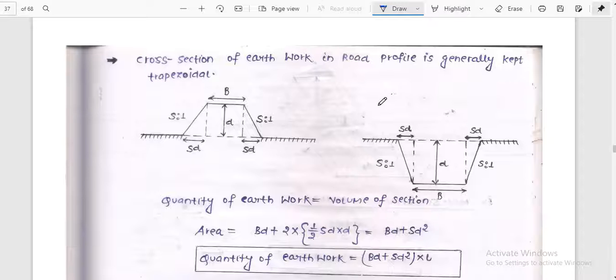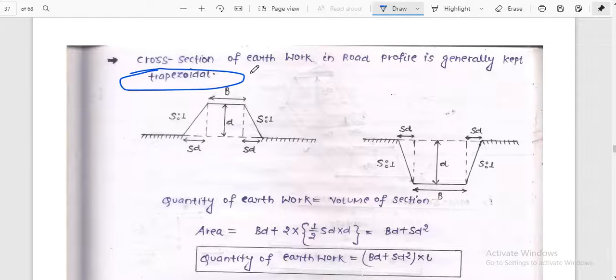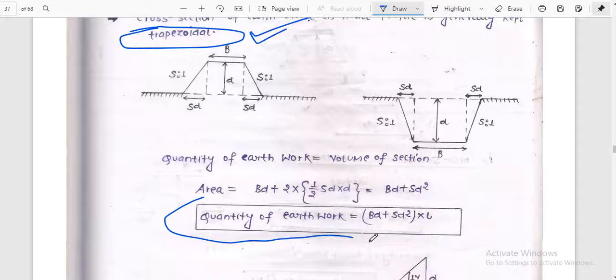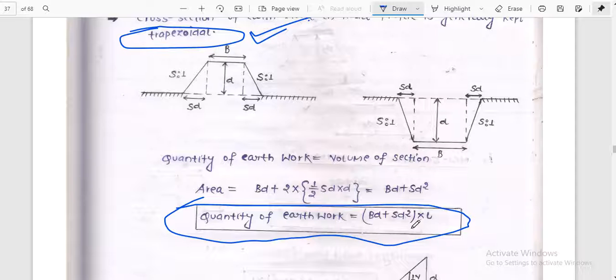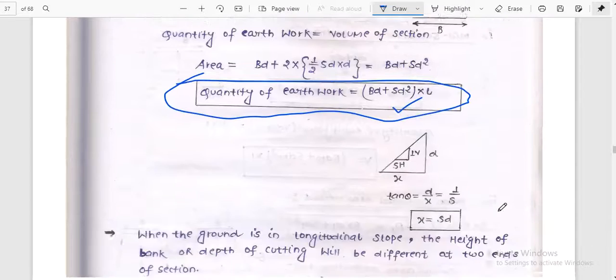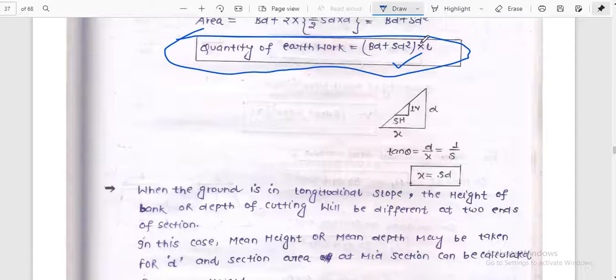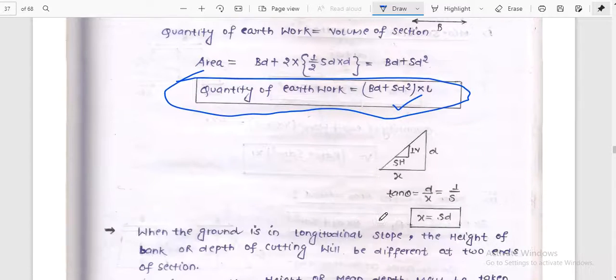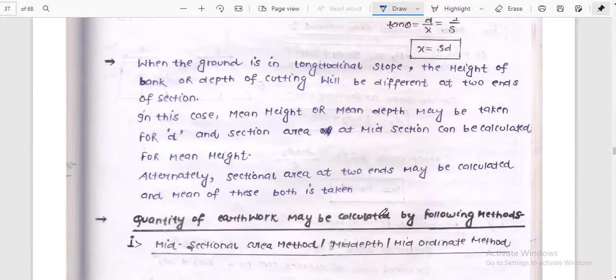Cross section of earthwork in road profile is generally kept trapezoidal, okay, trapezoidal shape. The quantity of earthwork is BD plus SD squared into L, where S is the slope, D is the vertical distance, L is the length, and B is the width.